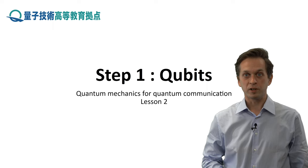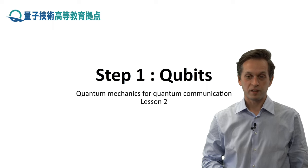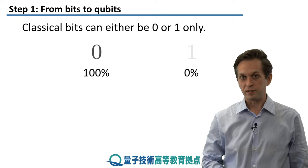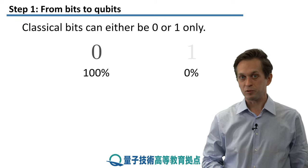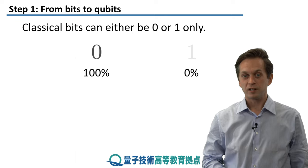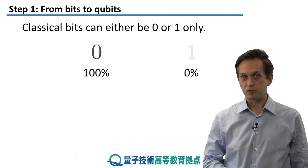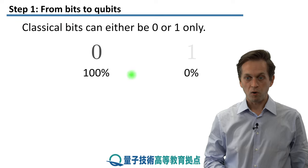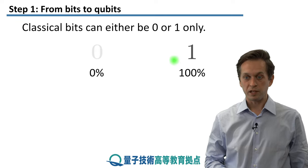Step one is on quantum bits, also known as qubits. So we have seen in a previous lesson that all information can be represented by classical bits, and particularly in the classical world. You have zeros and you have ones. So classical bits can only be in two states. It can either be in a zero, like here, or it can be fully in one, nothing in between.